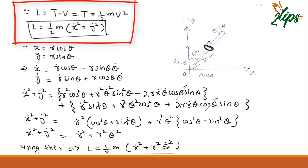Since this motion is happening in the plane, this velocity will have two components: X component and Y component. So I can write this Lagrangian as half m (X dot squared plus Y dot squared). Now I need to find these X dot and Y dot in terms of other parameters.